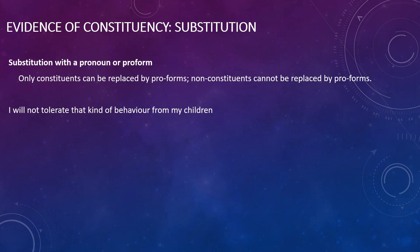Here's an example. We could say: 'I will not tolerate that kind of behavior from my children.' We could paraphrase it by saying 'I will not tolerate it,' where we have used the pronoun 'it' to replace the chunk of words 'that kind of behavior from my children.' This suggests that this chunk of words is a constituent — in this case, probably a noun phrase.